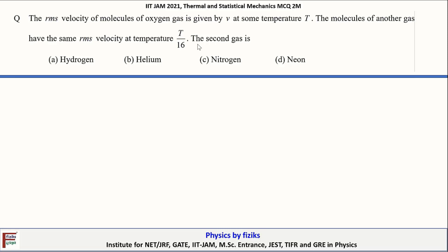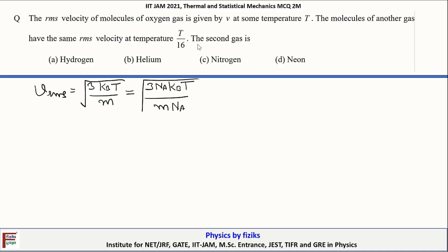The root mean square speed is given by the expression V_RMS equal to the square root of 3k_B T divided by M, where T is the temperature of the gas and M is the mass of one gas molecule.